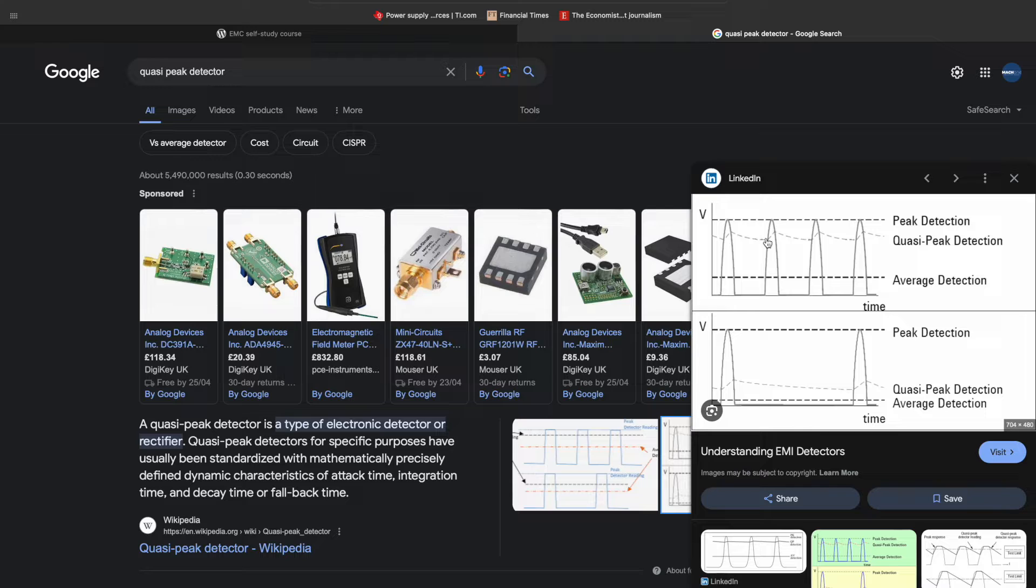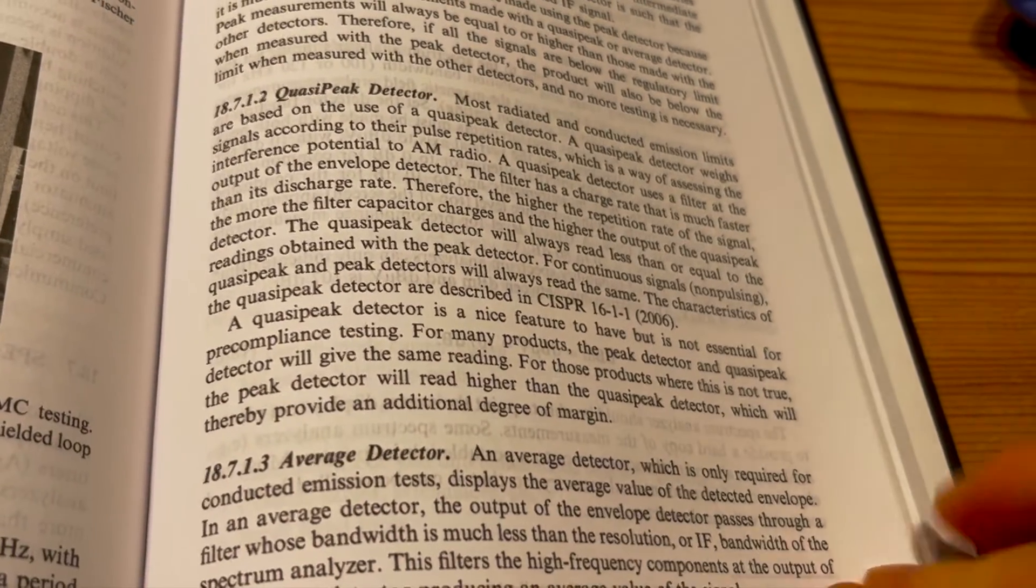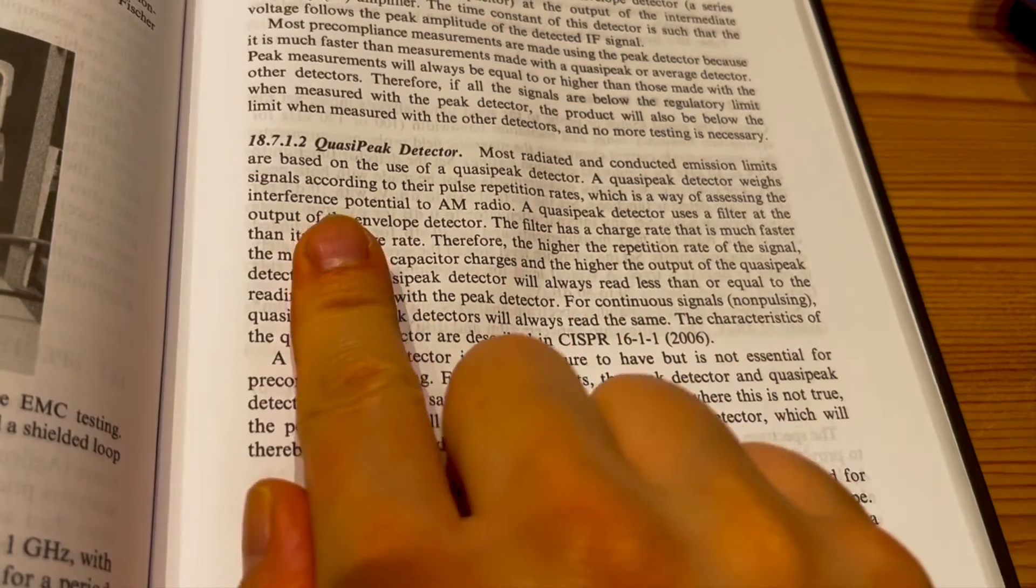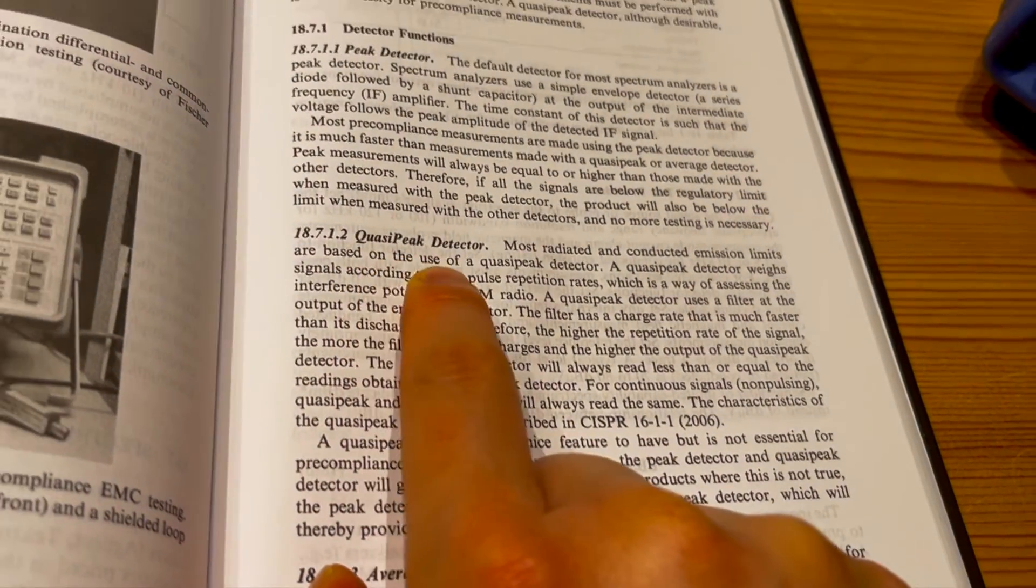Most of the time it will be different with average and peak. But I haven't found any really good videos on YouTube to explain why do we need a quasi-peak. So we understand how it works, but why. So this video is to demystify that. Okay, so let's first find the explanation in Henry Ott's EMC book.